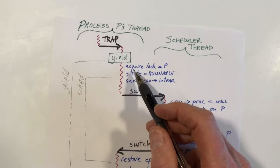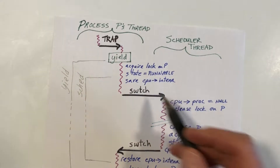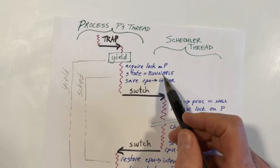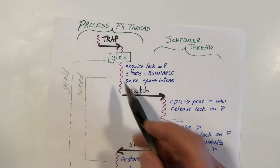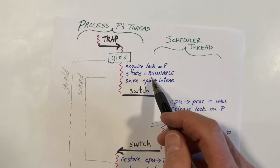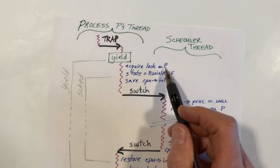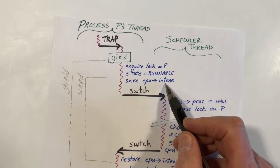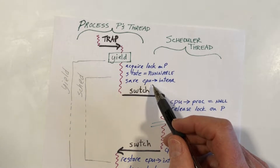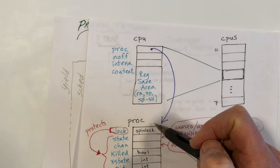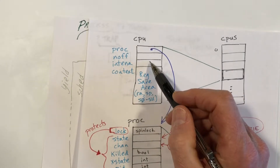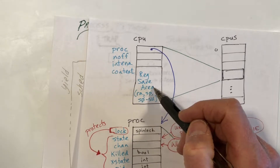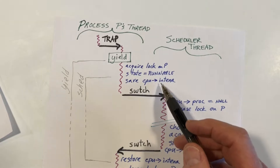Let's look at what happens in the yield and SCED functions before we call switch. We are going to examine and modify the state of process P. While we are running, the state is running, but we're going to change it to runnable — meaning it's no longer running and is waiting for another time slice. So we acquire the lock on process P itself, change its state to runnable, and also save the interrupts-enabled field of the CPU structure. The CPU struct has an in-off counter, an interrupts-enabled field for previous status, and a context area where we save registers.